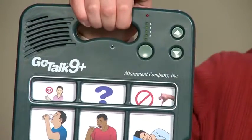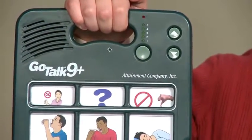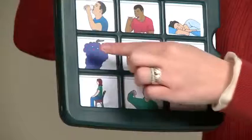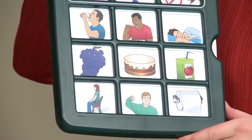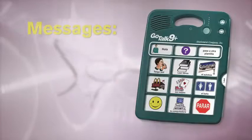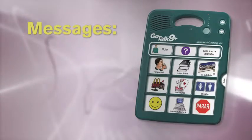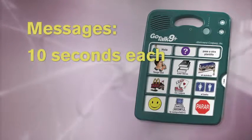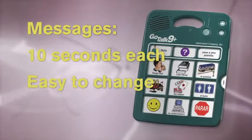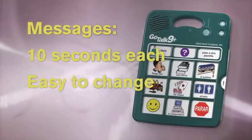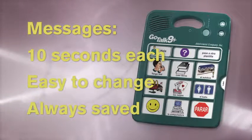In order to get out of record mode, I simply need to push the record button on the back of the device, and you can see that my red light is now off. Now, if I'd like to hear what I just recorded, I need to press the picture. I'm hungry for a snack. Can I have some grapes, please? And I can hear my message. You can record any or all of the buttons, up to ten seconds each, which leaves plenty of time for most messages. And you can change the message any time you want. All of your messages are saved until you decide to change them.